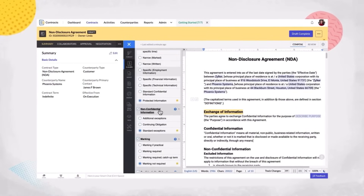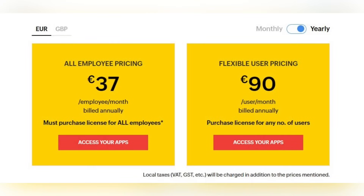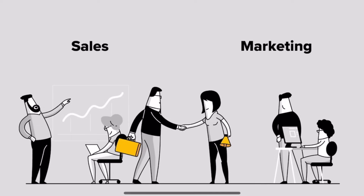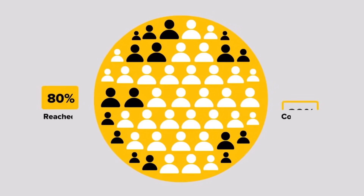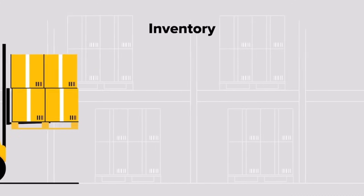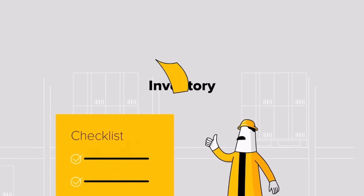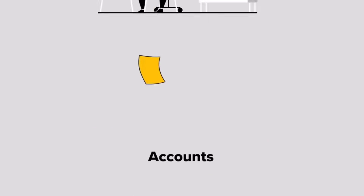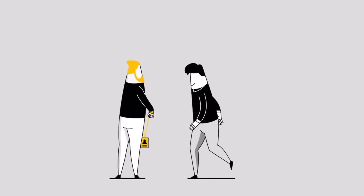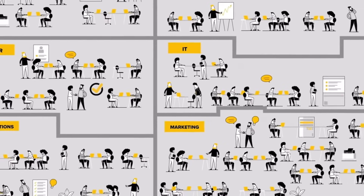Regarding pricing, the basic plan for Zoho One for all 45 apps is 37 euros per employee per month, which is a bargain, because you get so many great apps that integrate with each other seamlessly. In general, Zoho One is the best option for any business owner to manage all business processes in one place and see how different departments contribute to sales and reaching your goals. If you want to try it for your company, you can get a free trial by the link down below in the description box, and you can also book a free 30-minute consultation with one of our experts if you have any questions about Zoho software.